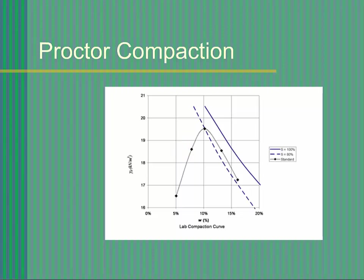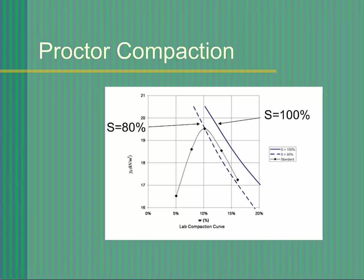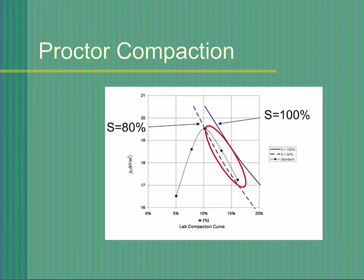In addition to plotting the dry unit weight versus compaction moisture content, you will also plot a curve corresponding to 100% saturation — the zero air voids curve — and a curve corresponding to 80% saturation. These two curves are used as a quality check on your data. Since it is impossible for a soil to be compacted beyond 100% saturation, points lying to the right of the 100% saturation curve must be in error. In addition, most soils achieve optimum moisture content at about 80% saturation, and the right limb of the Proctor curve should be between the 80% and 100% saturation curves and approximately parallel to the 100% curve.